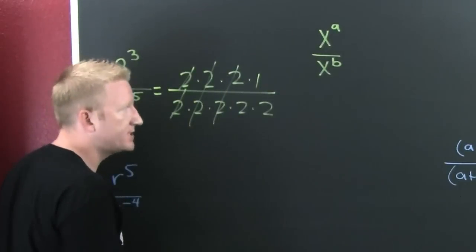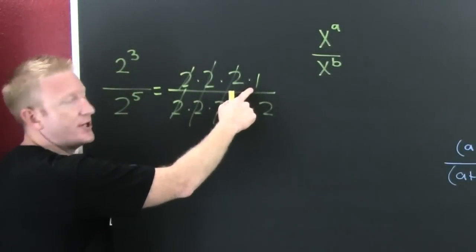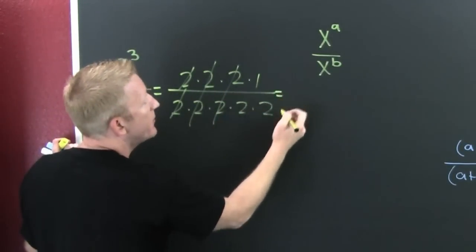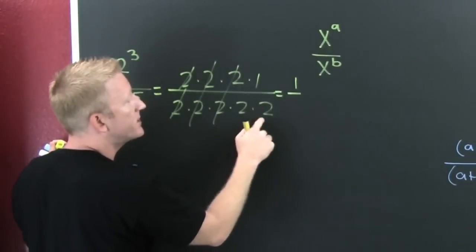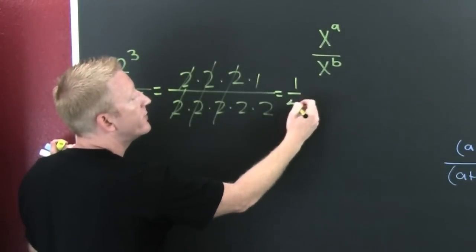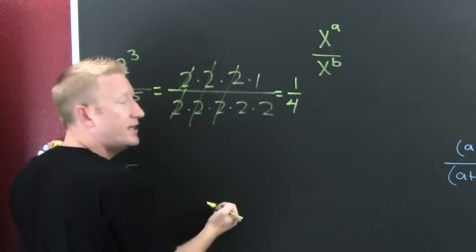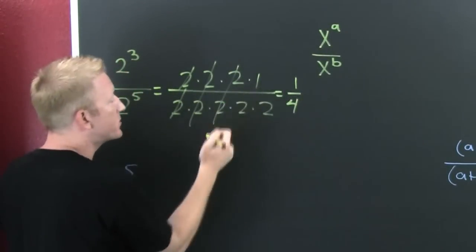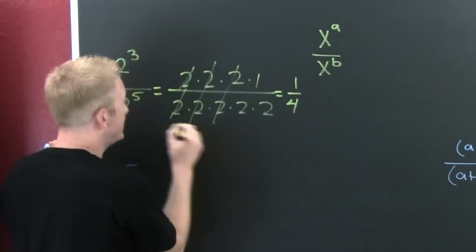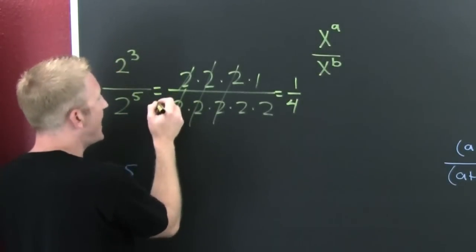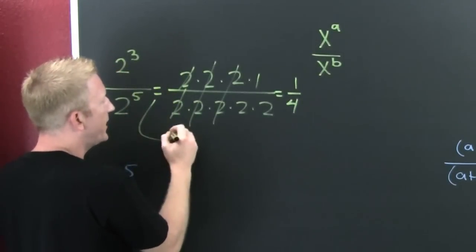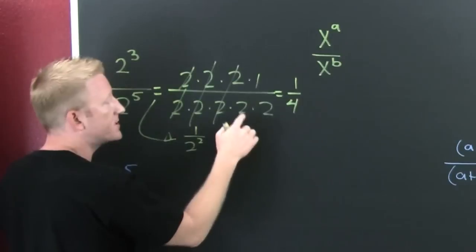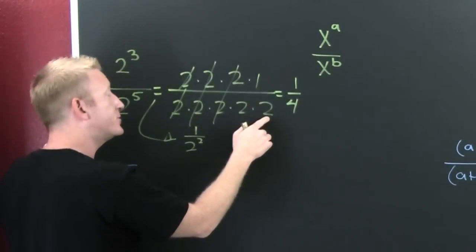After the dust settles, I put a flag where that numerator used to be. Here we see this is going to be 1 over 2 times 2, or 4. That's what's going to happen. This would be equivalent to looking at this as 1 over 2 to the 2, because that's 2 squared.